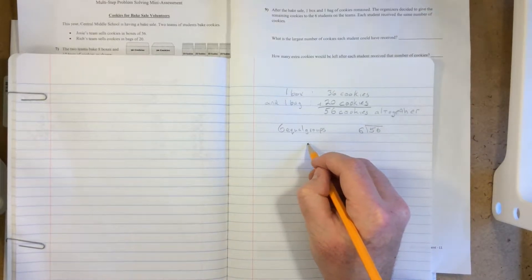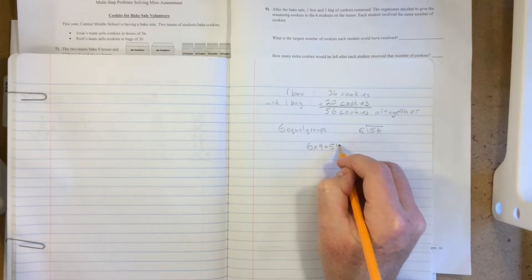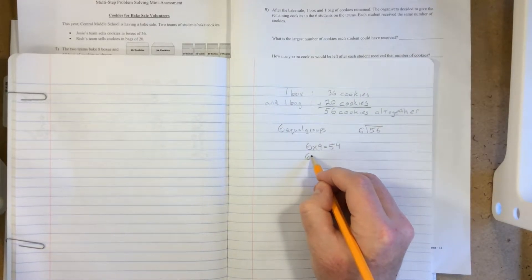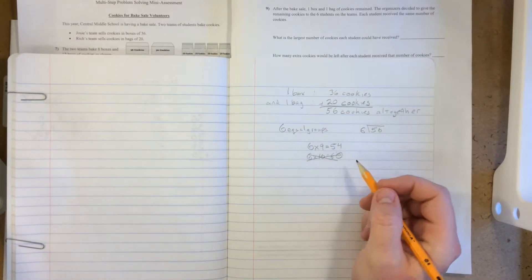So we know that 9 times 6 is 54, and that's very close to 56 and less than it. If we wanted to say that was 6 times 10, we'd get 60, and that's greater than 56, so that can't be the number.